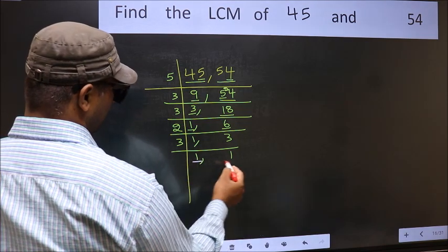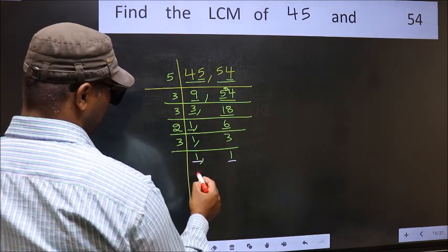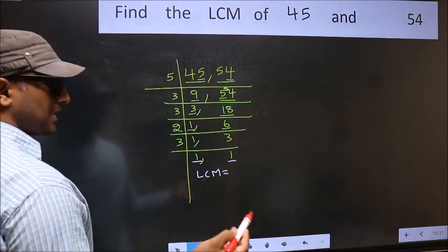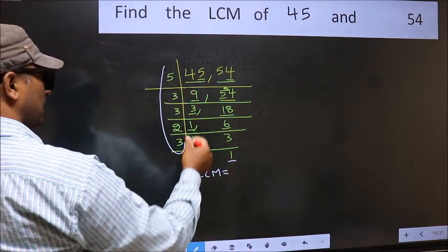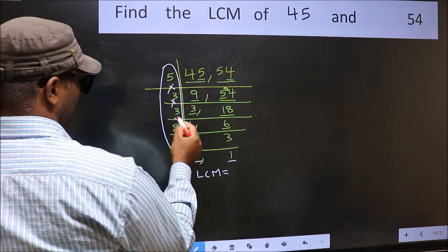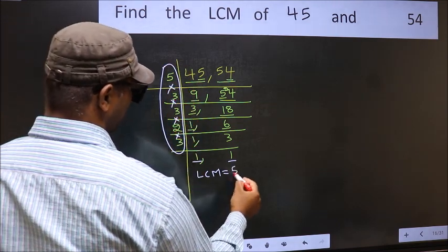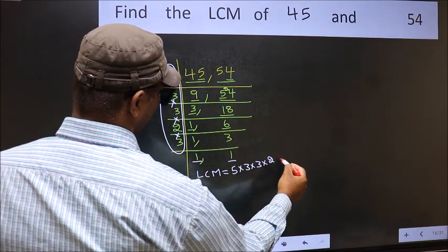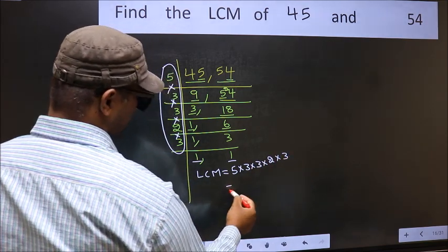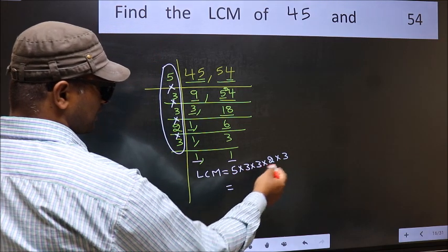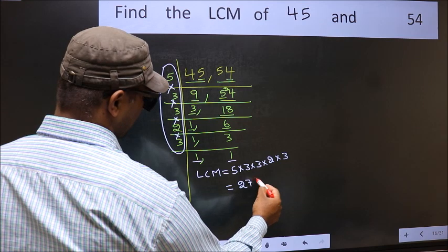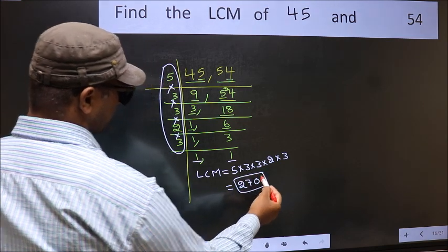So we got 1 in both places. So our LCM is the product of these numbers. That is 5 into 3 into 3 into 2 into 3. When we multiply these numbers, we get 270 is our LCM.